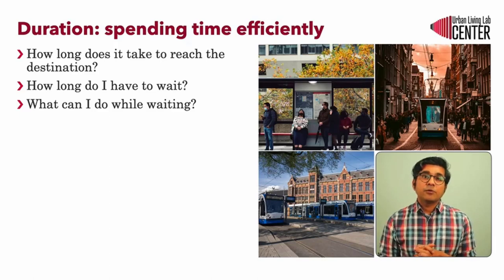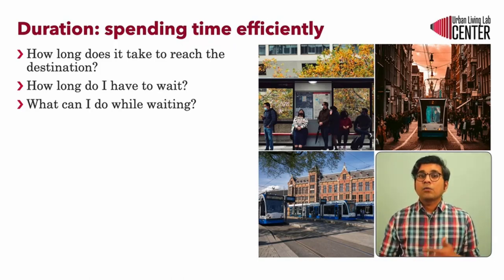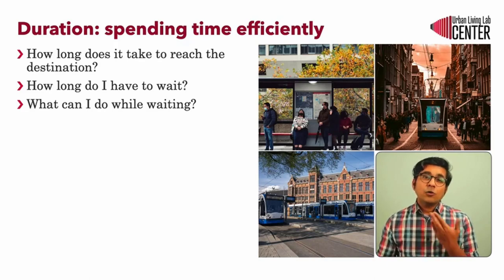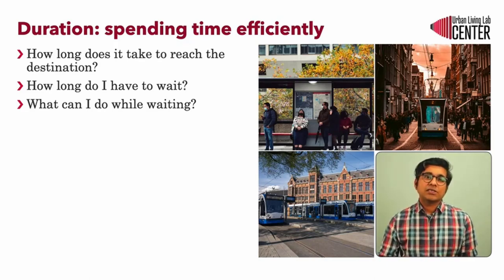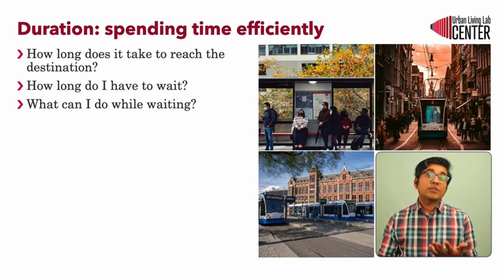Duration in simple words is how long it takes to reach the destination. Duration includes the time taken to reach the station, the waiting time, the travel time, and the time taken from the end station to reach the final destination. While creating transit grids, direct connections, express services, and right-of-way as seen earlier can reduce travel time. The waiting time can also be reduced by providing amenities at train stations and creating connection stations and interchanges with other services, giving the transit user a chance to do multiple activities within their trip, which also avoids additional trips.